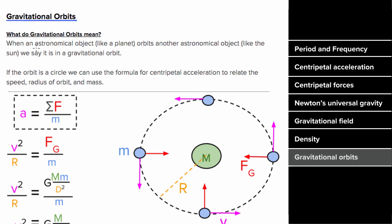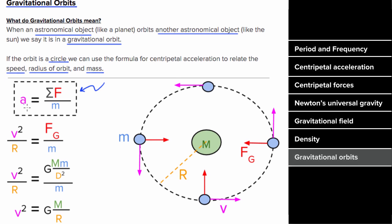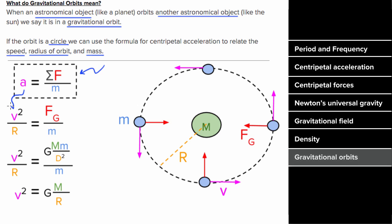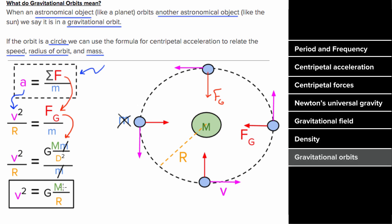Gravitational orbits are a special case of centripetal acceleration where an object orbits another due to gravitational force. If the orbit is circular, we can relate the speed, radius, and larger mass using Newton's second law and centripetal acceleration. We plug in v squared over r for the centripetal acceleration, and the gravitational force big G M m over r squared as the centripetal force. The mass of the orbiting object cancels, giving an expression where the orbital speed equals the square root of big G times the larger mass divided by the center-to-center distance.